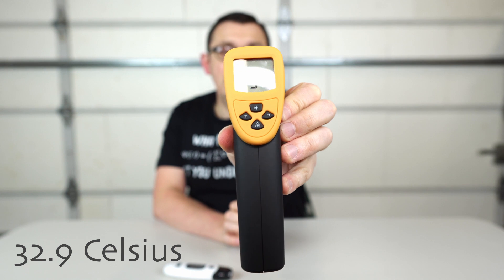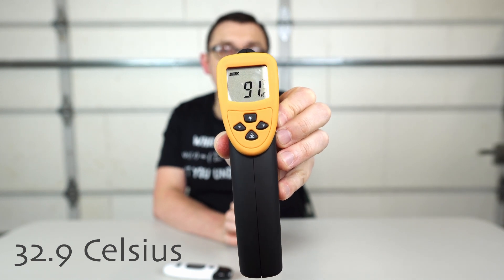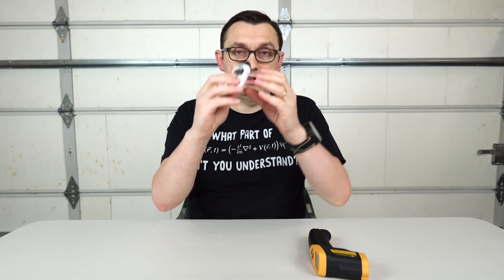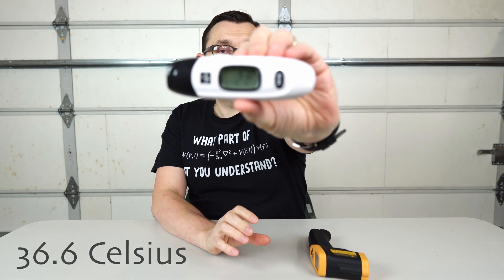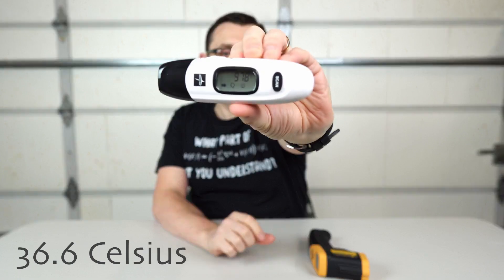Look at this. 91.2 degrees Fahrenheit. Well, let's check temperature with this thermometer now. 97.8 degrees Fahrenheit. Look at this. So it's actually a big difference.